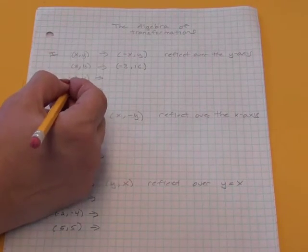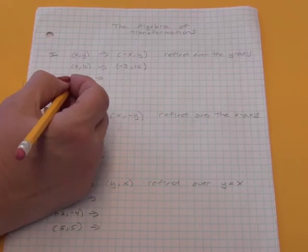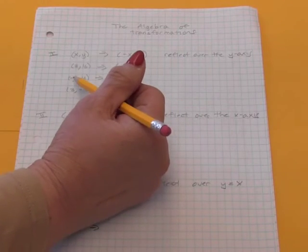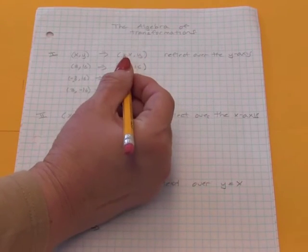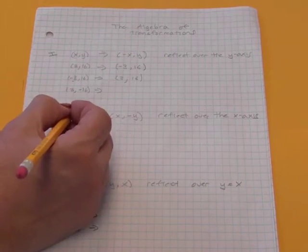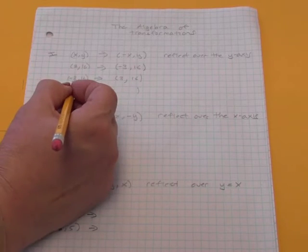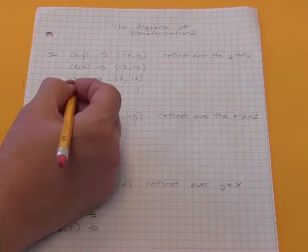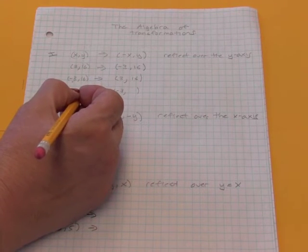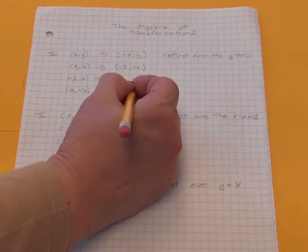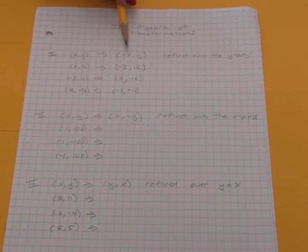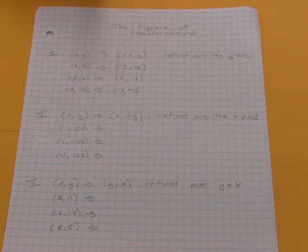However, if the x-coordinate was already negative 3, when we multiply that by negative 1, we get positive 3. Again, we're multiplying this x by negative 1, and we're leaving the y alone. In this case, 3 is positive. We multiply it by negative 1, and we get negative 3. And we leave the y alone, even though it happens to also be negative. We don't change the y, whether it's positive or negative. And whatever x is, positive or negative, we multiply it by negative 1.